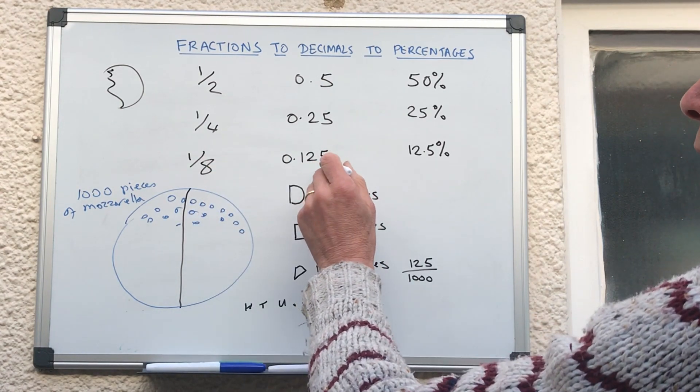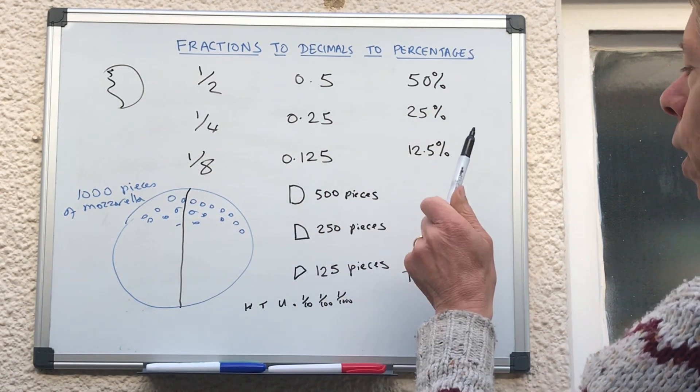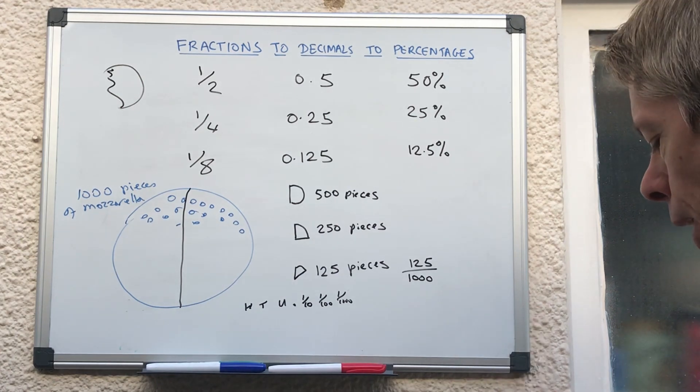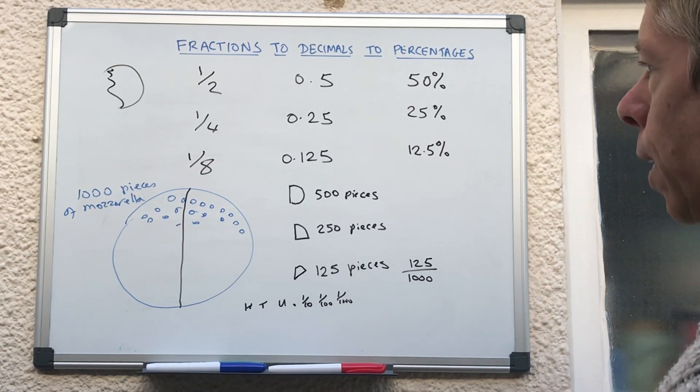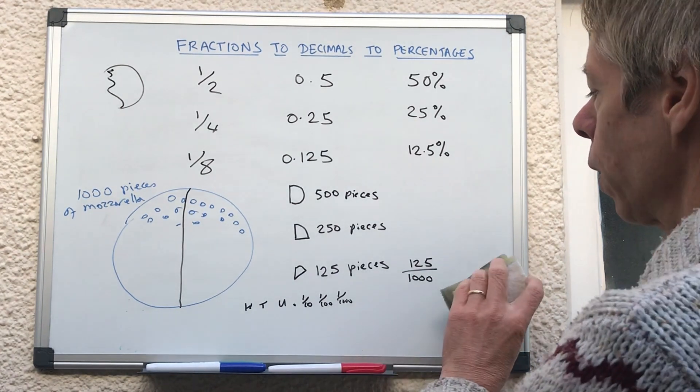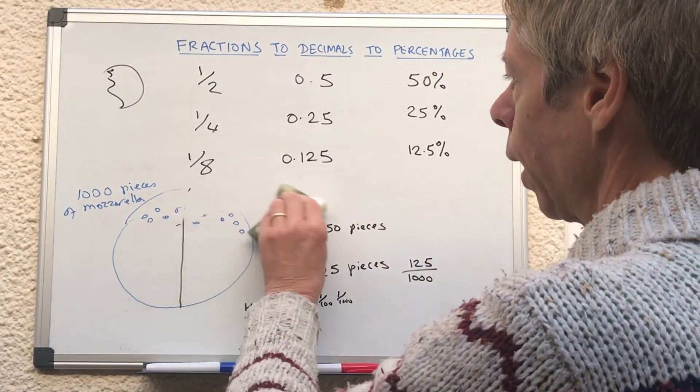So 1 eighth is 0.125, which is 12.5%. So that's how to work out an eighth, the mozzarella example. I'm going to get rid of that now.